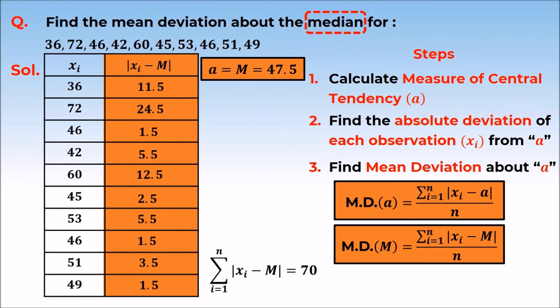Now we can find the mean deviation easily. It will be equal to 70 upon 10. Mean deviation about median will be equal to 7.